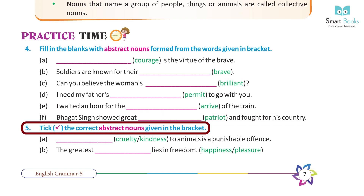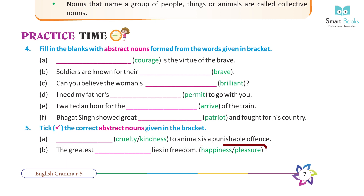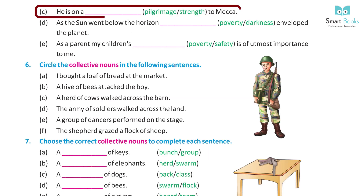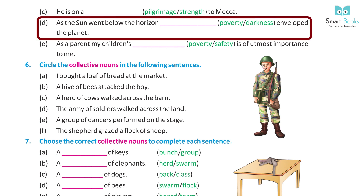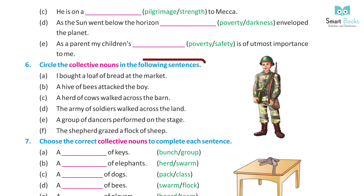Question 5: Take the correct abstract nouns given in the brackets. A) Cruelty to animals is a punishable offense. B) The greatest happiness lies in freedom. C) He is on a pilgrimage to Mecca. D) As the sun went below the horizon, darkness enveloped the planet. E) As a parent, my children's safety is of utmost importance to me.